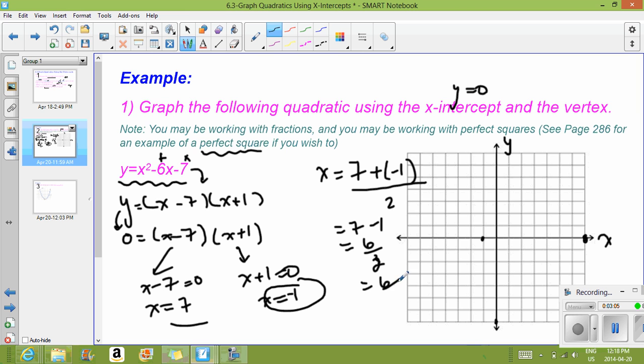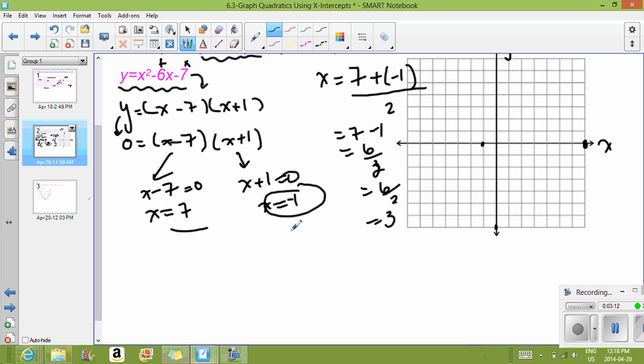And so 6 divided by 2 is 3. This is the x-coordinate of our vertex. Now we just need to find our y-coordinate. That should have been divided by 2. So we take our equation y equals x squared.